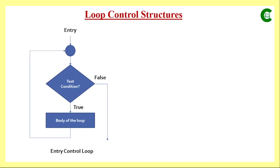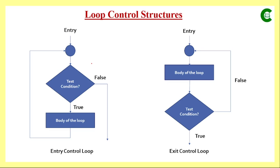Based on the body of the loop and control statement, loops can be broadly classified into two types: entry control loop and exit control loop. In the case of an entry control loop, before we execute the body of the loop, we check the condition. Based on that condition, the decision will be either the program control goes inside the loop and executes all the statements, or it skips the loop entirely.